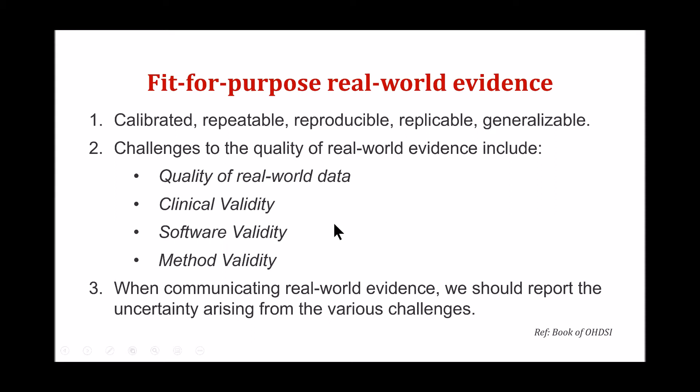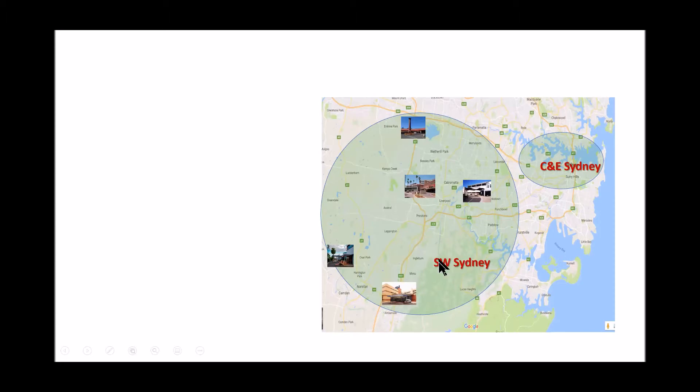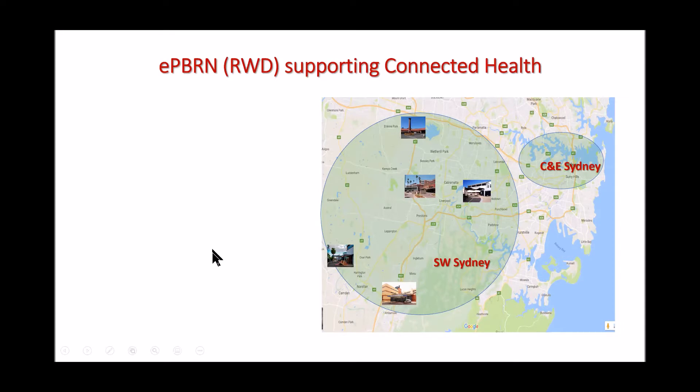When communicating real-world evidence, we should also report the uncertainty arising from the various challenges. Much of what I'll be talking about is based on work done with our electronic practice-based research network at the University of New South Wales in Sydney — the EPBRN. This is a network of general practices and local health district facilities such as community health services, hospital services, emergency departments, and so on, covering metropolitan Sydney, southwest Sydney, and central and eastern Sydney, each with about a million people.